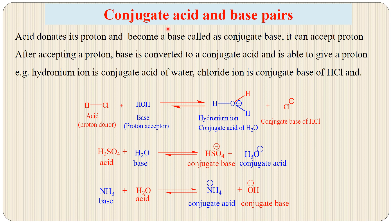What is a conjugate acid-base pair? When an acid donates its proton, it becomes a base called the conjugate base, because it can now accept a proton. Similarly, after accepting a proton, a base is converted into its conjugate acid. For example, H₂SO₄ is the acid and water is the base. After losing a proton, H₂SO₄ is converted into HSO₄⁻, which is the conjugate base of sulfuric acid. The acid is converted into its conjugate base, and the base is converted into its conjugate acid.